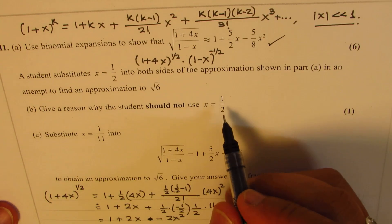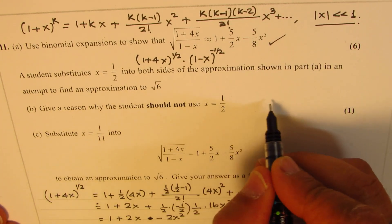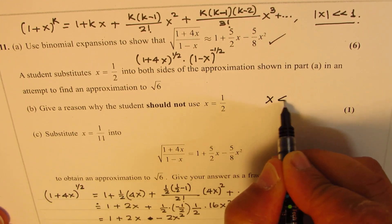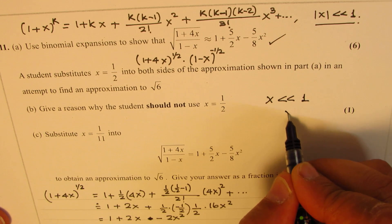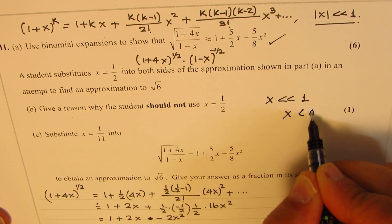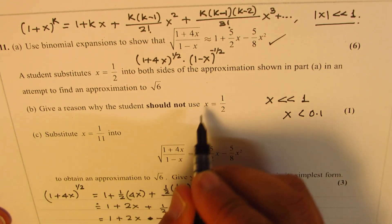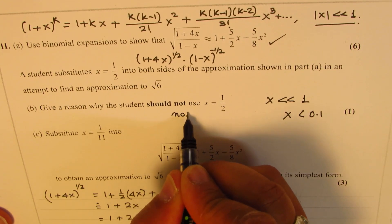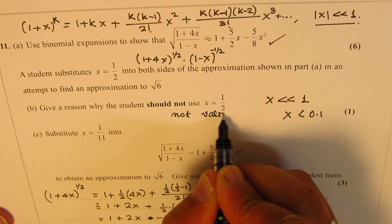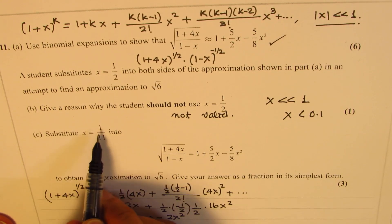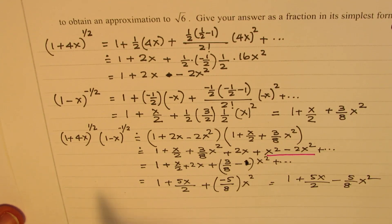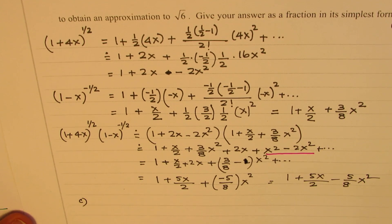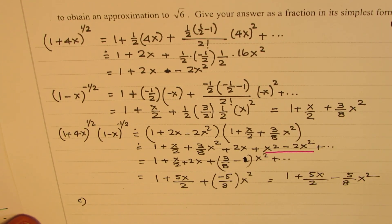As we discussed, x must be very, very small compared to 1 — we expect x to be less than 0.1. That is why x equals one half is not valid for this expansion. Since 1 over 11 is quite valid, let's use part C to find the value of square root 6 by substituting x equals 1 over 11.